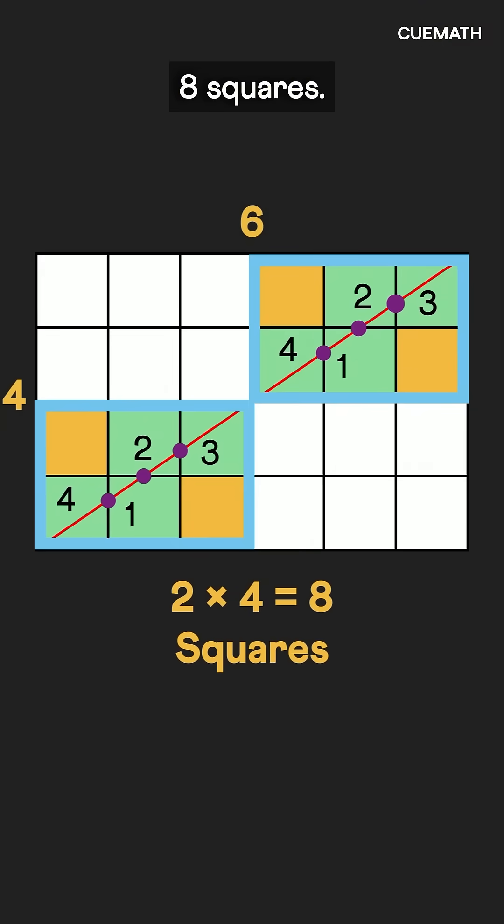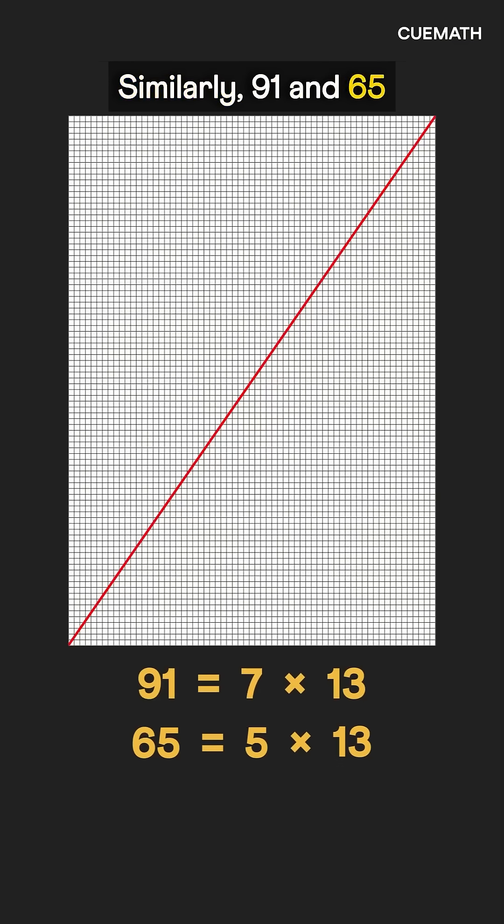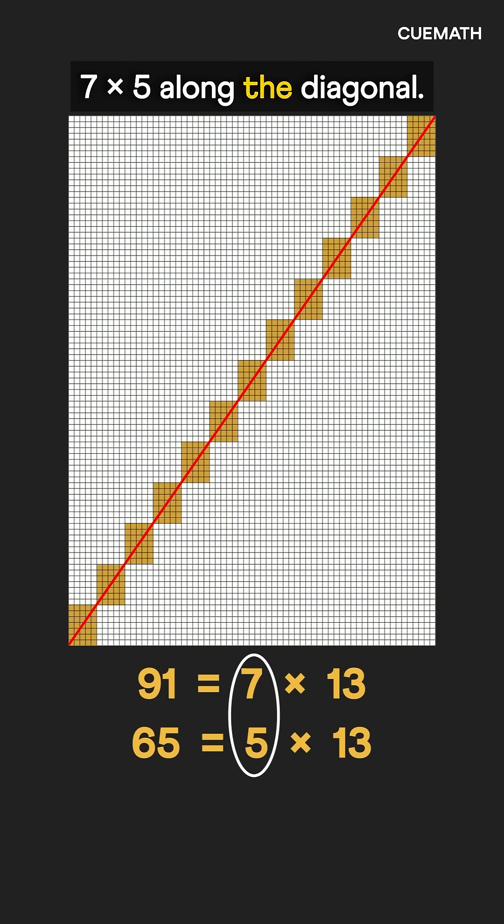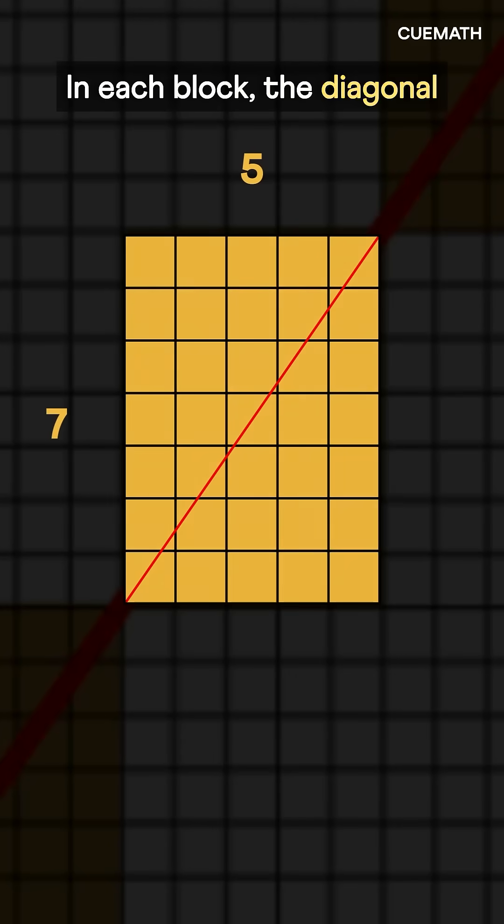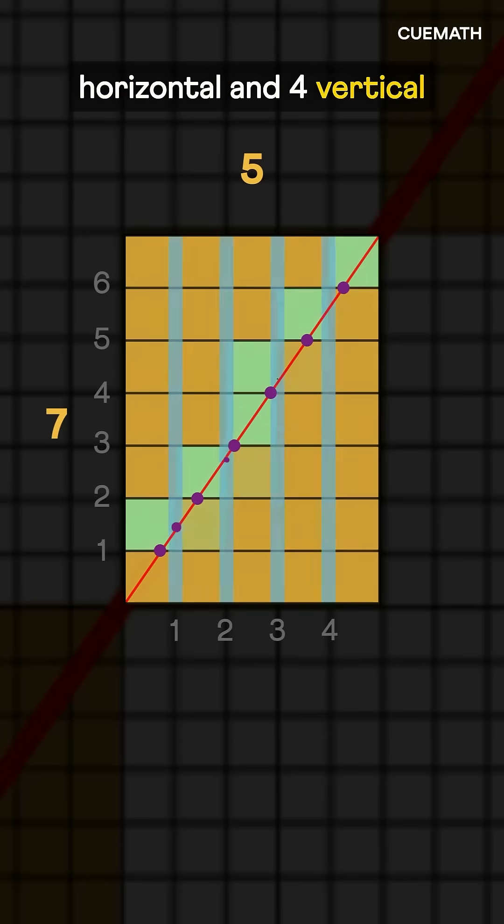So two blocks make eight squares. Similarly, 91 and 65 share a factor of 13, forming 13 blocks of 7 by 5 along the diagonal. In each block, the diagonal crosses six horizontal and four vertical lines.